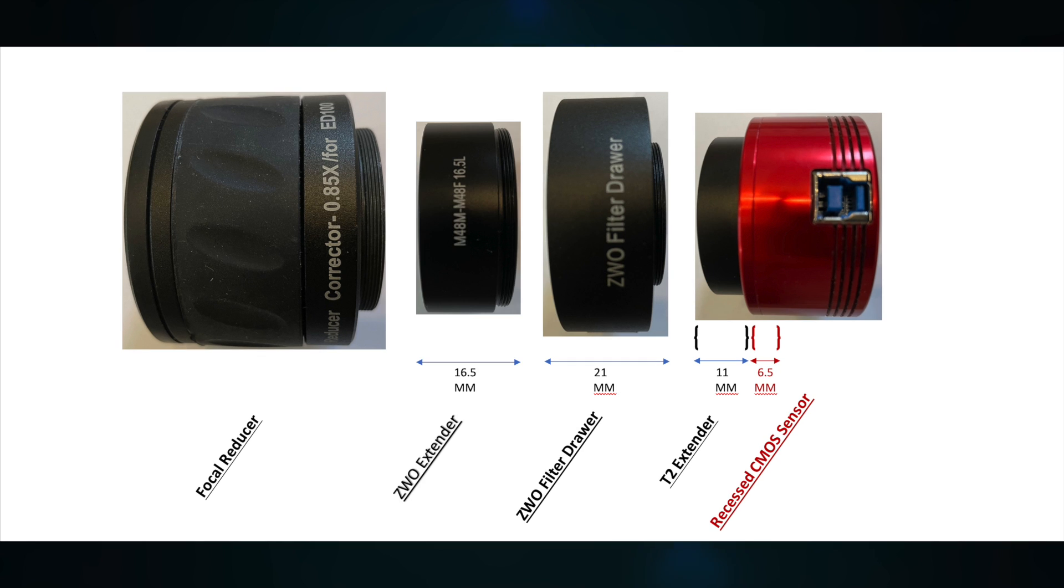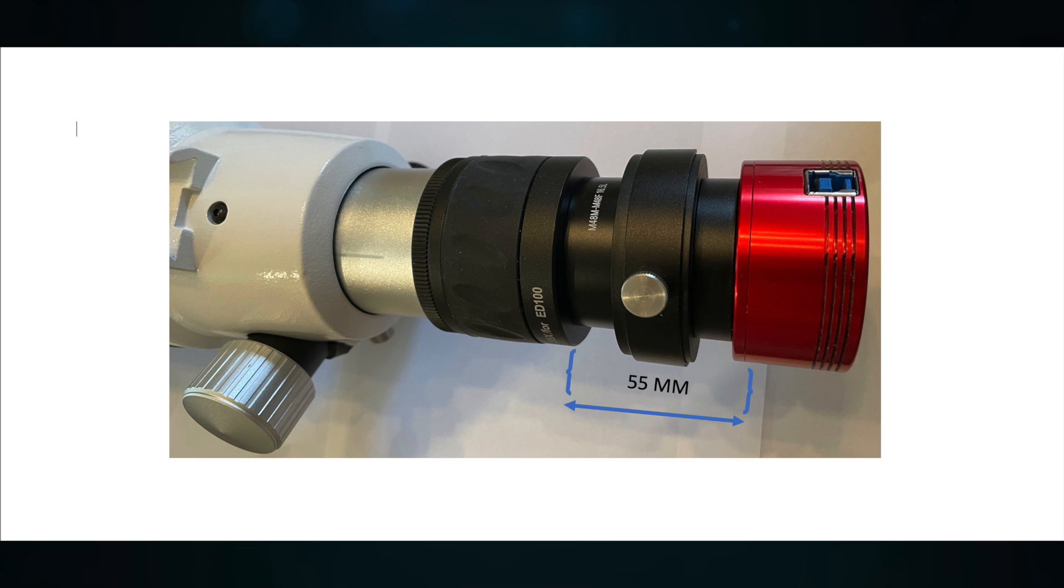So the last item next to the focal reducer is the ZWO extender in the 16.5 millimeter size. This completes my 55 millimeter measurement of back focus. So here you can see the assembled image train connected to the telescope.